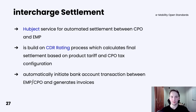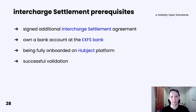Hubject also offers another service called Intercharge Settlement. This service is supposed to automate the settlement process between CPO and EMP. It is built on a CDR rating process, which calculates the final settlement based on product tariff and CPO tax configuration. Hubject will automatically initiate a bank account transaction from EMP to CPO and create an invoice. A reverse transaction from CPO to EMP is also possible in case anything goes wrong. Requirements include signing an additional Intercharge Settlement agreement, having a bank account at PXFS bank, being fully onboarded on the Hubject platform, and successfully passing the validation process.